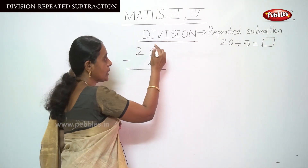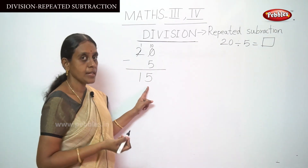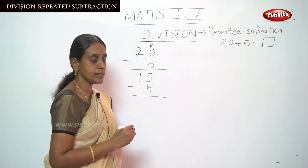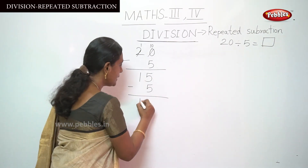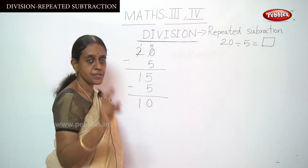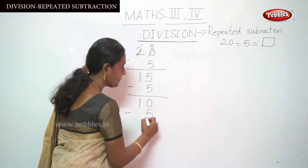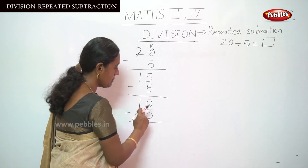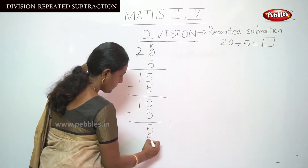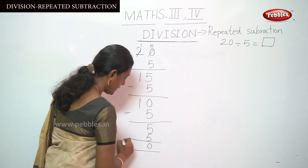20 minus 5, that is 15. Again put this divisor number here and subtract: 15 minus 5, that is 10. Again subtract: 10 minus 5, that is 5. Again put this 5 and subtract until the ending will be 0. So 5 minus 5, the answer is 0.